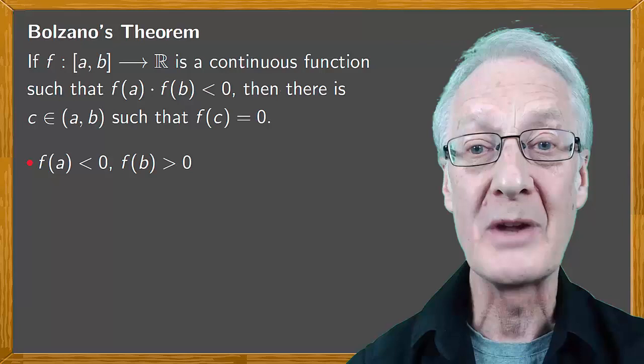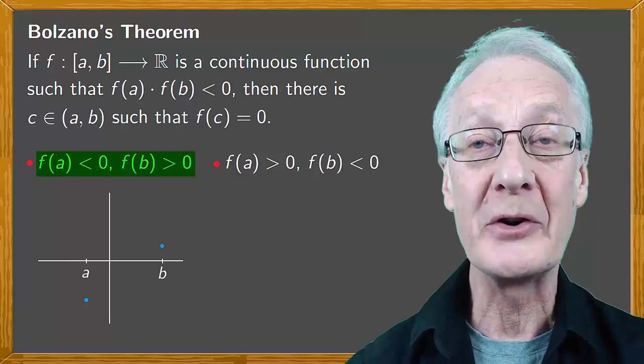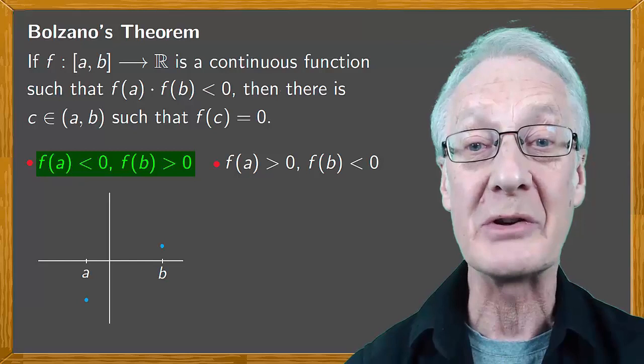In the first case the function starts off negative and has to become positive, and because it's continuous there can't be any sudden jumps. So there has to be a point c where the value of the function is zero.